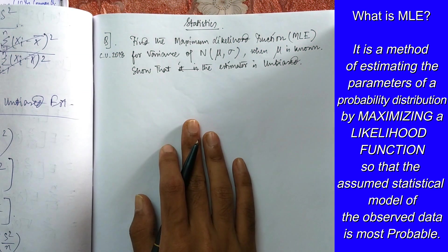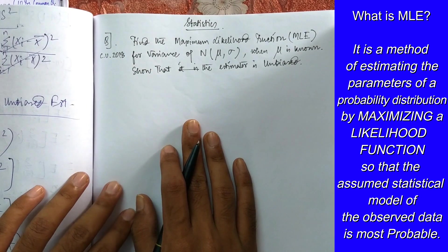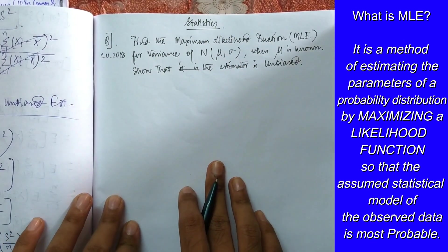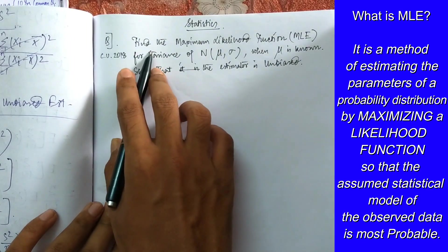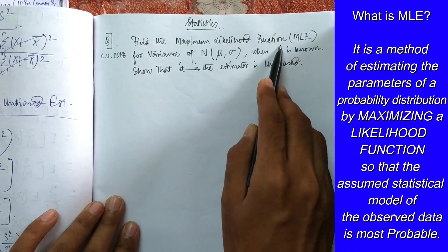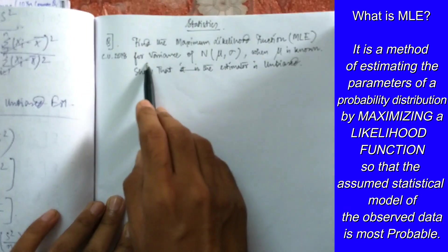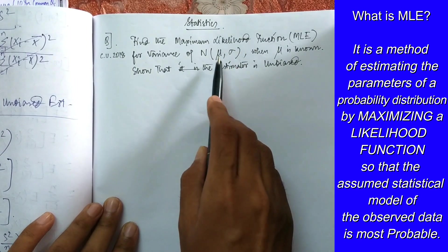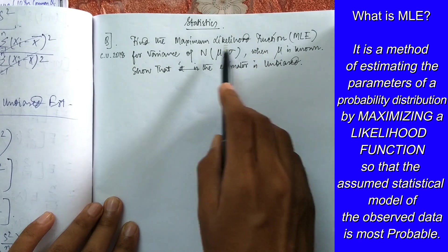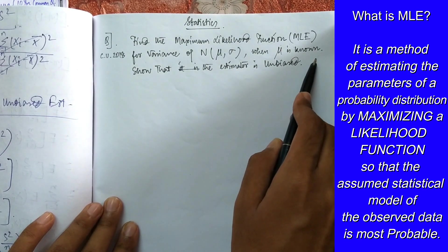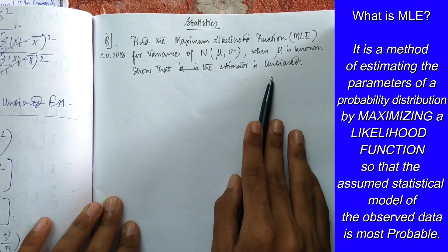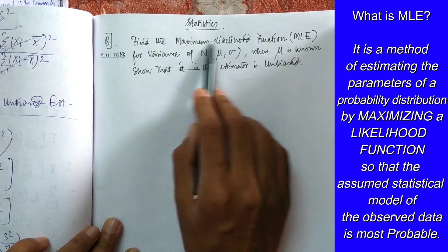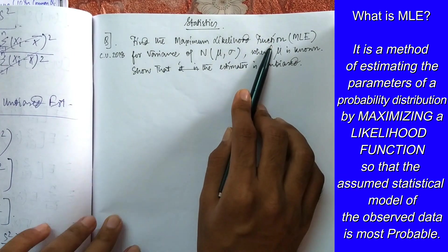Welcome back to my channel, this is Ritavan. Today we have another problem on statistics. The problem says to find the maximum likelihood estimator, or MLE, for the variance of a normal distribution where mu is known. We also have to show that this estimator is unbiased. Our first target is to find the maximum likelihood function.